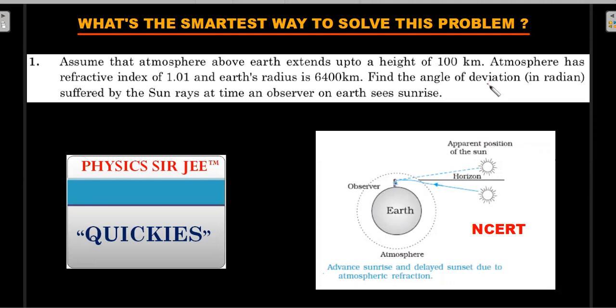Assume that the atmosphere above Earth extends up to a height of 100 kilometers. Atmosphere has a uniform refractive index of 1.01 and Earth's radius is given as 6400 kilometers. Find the angle of deviation in radians suffered by the sun rays at a time an observer on Earth sees sunrise.